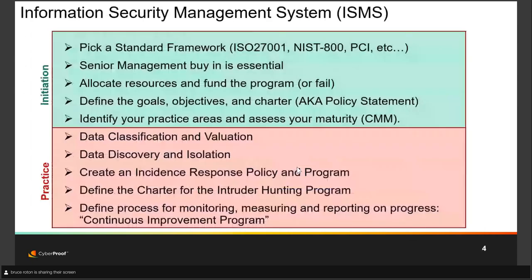In terms of prerequisites, the first thing you need to do is implement an ISMS — an information security management system. People frequently ask which one to use, but it doesn't matter much as long as you implement one and measure your maturity against it. You could pick ISO, NIST, or PCI — essentially replace 'card member data' with 'stuff I care about.' You must get management buy-in, allocate resources, fund the program, define goals, objectives, and charter, identify your current maturity, and set targets for where you want to be.